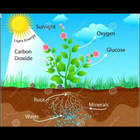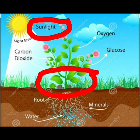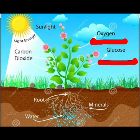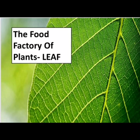The process by which green plants make their own food by using carbon dioxide and water, in the presence of sunlight and chlorophyll, to produce oxygen and glucose, is called photosynthesis. The food factory of a plant is the leaf — plants ka major food leaf mein banta hai.